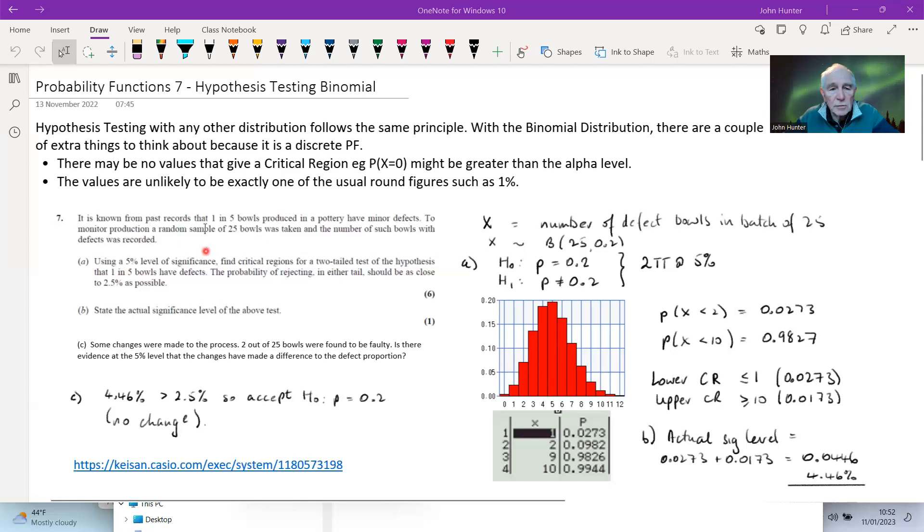The other thing is that the values are unlikely to be exactly one of the round figures that we go for. So if we choose a 5% one tail test, then it might well be that, we can see from this example here that if our critical region is 0.12, then that's going to be more than 5%. If we choose 0.1, it's going to be less than 5%. So it won't come exactly. So what we have to do is normally choose the closest. And it's actually going to change the significance level of the test. So our actual significance level is different to the one that we might set out to establish.